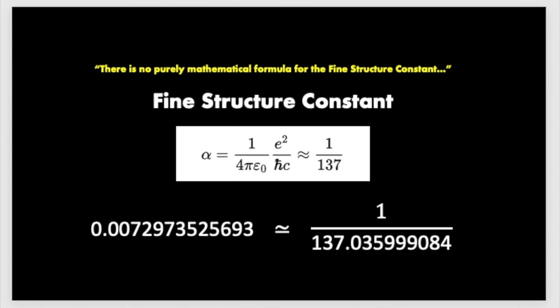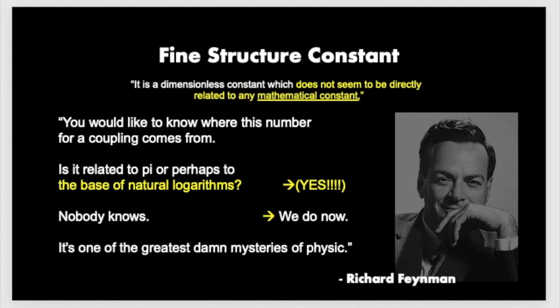This is generally the formula and the numerical representation of it. Alpha is generally the term used, and it's often represented by being 1 over 137. It's a dimensionless constant which does not seem to be directed to any related mathematical constant, as far as anybody knows currently. And this number sort of drives physicists crazy.